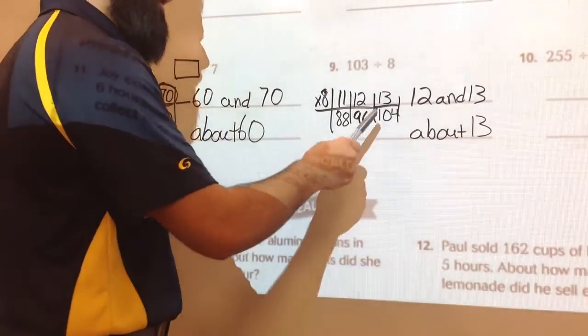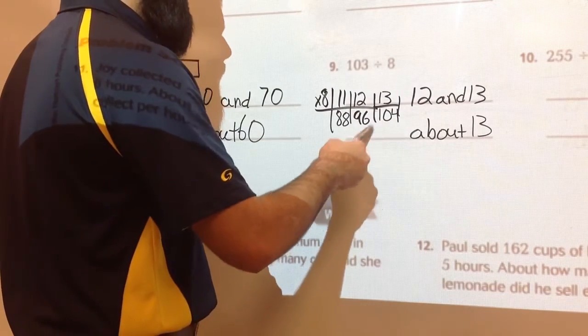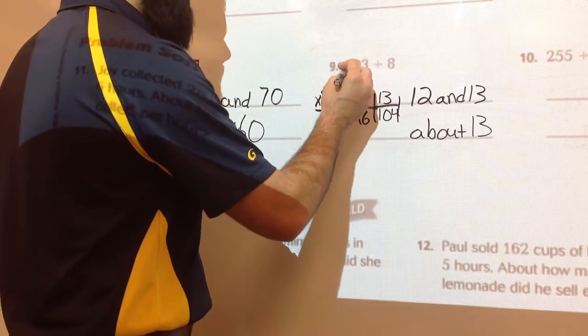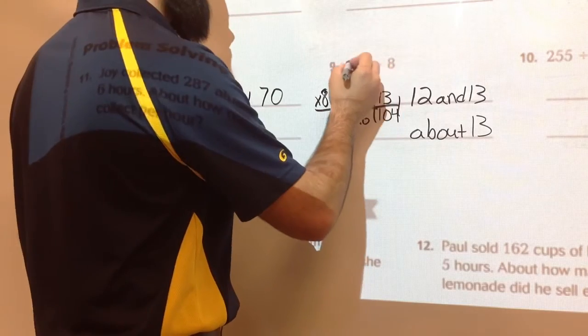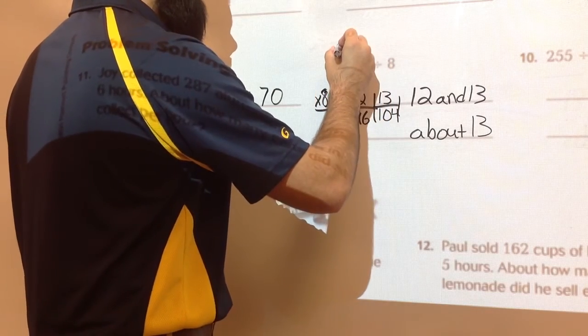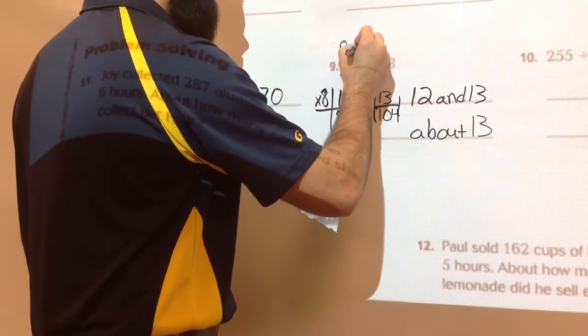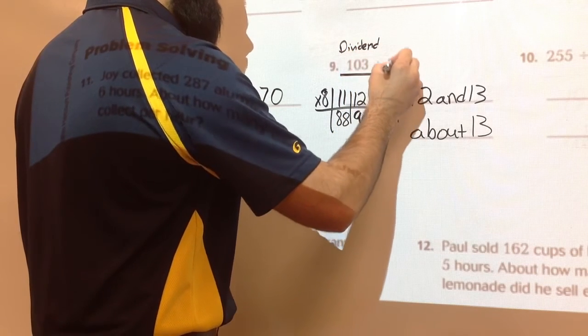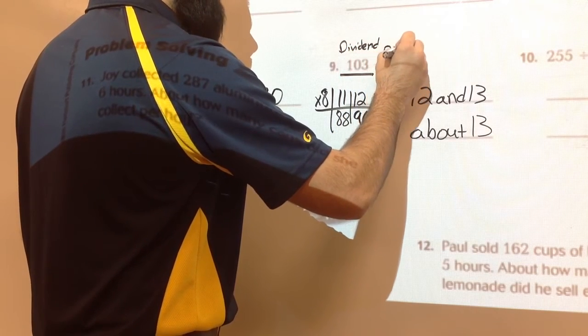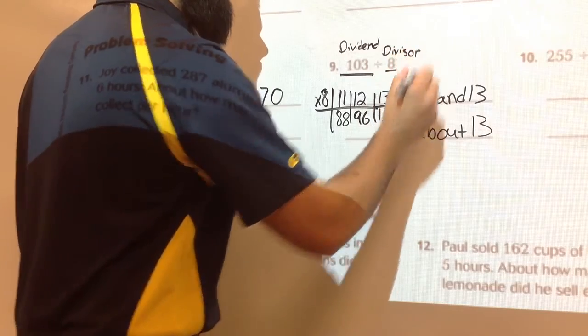It can get confusing when you're comparing your products to this. What do we call 103? It's called the dividend. Dividend. And 8 is our? Divisor. Divisor. Very good. Very good. Okay.